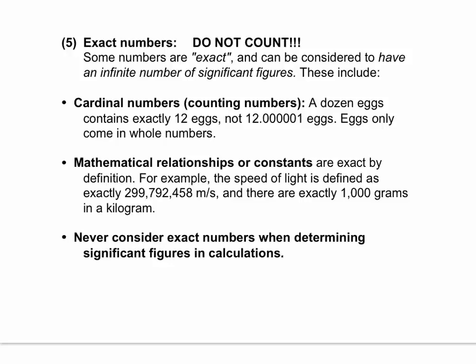Other examples of exact amounts would be mathematical relationships, metric conversions. There are exactly 1,000 grams in a kilogram. Okay? The speed of light is exactly 299,792,428 meters per one second. It is exactly known to be that amount. No more, no less.